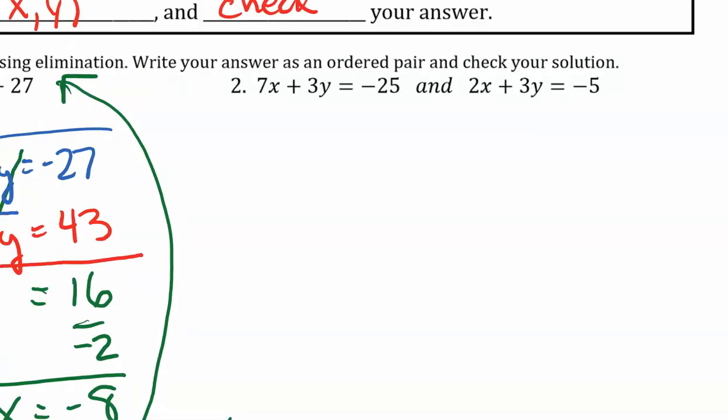Our second problem. Here I see that I have 7x and 2x. Well, those aren't even the same number for the coefficient. But our y terms have the same number. One has a 3, the other has a 3. But I need the opposite. So I need to take one of the equations. I'm going to take the second one and I'm going to multiply everything by negative 1.